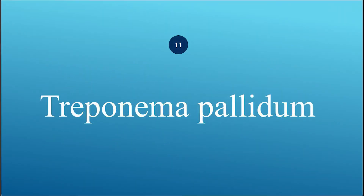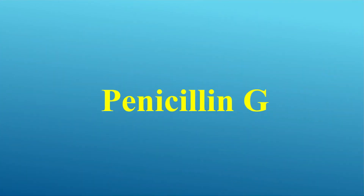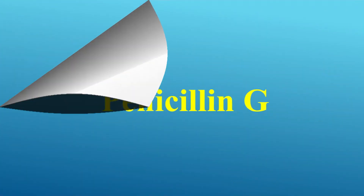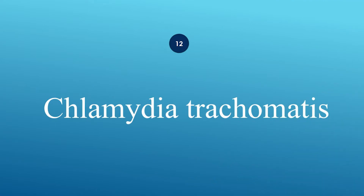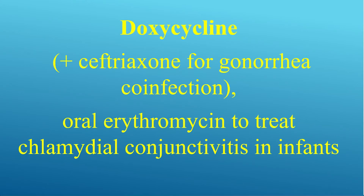What is the treatment for Treponema pallidum, which causes syphilis? Use penicillin G. How do you treat Chlamydia trachomatis? Use doxycycline. Add ceftriaxone for gonorrhea co-infection. Use erythromycin to treat chlamydial conjunctivitis in infants.